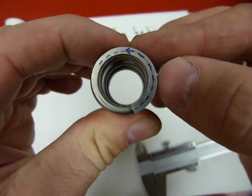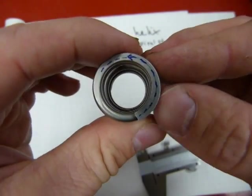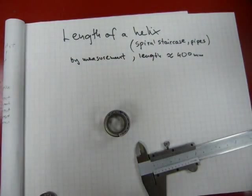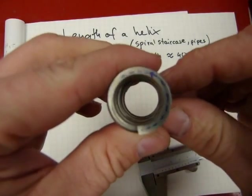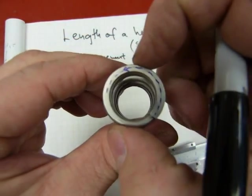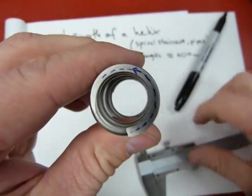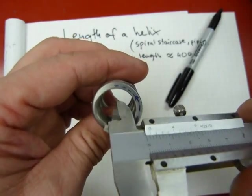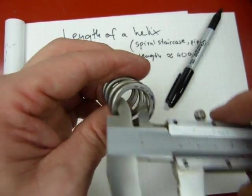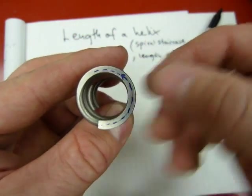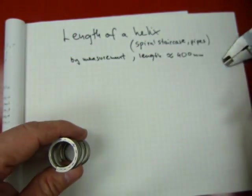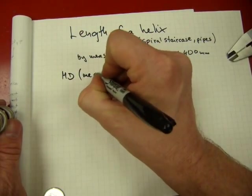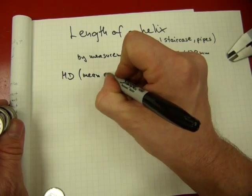We're gonna need to find a special circumference, the mean circumference. And for that, we're gonna need the mean diameter. This is the outside diameter from the outside of the coils. This one would be the inside diameter. Neither of these are really accurate. We need the mean diameter, abbreviated as MD. Mean diameter.